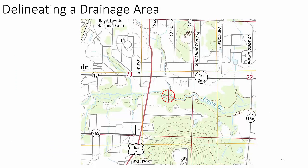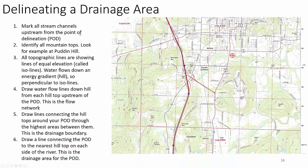We're going to identify a particular point on Town Branch — just east and south of where Highway 16 crosses Business 71 School Street. Let's say we have a project at this intersection just above where these two creeks converge, and we need to delineate the drainage above this site. The first thing you do is mark all the stream channels from that point — highlight them so you can see Cato Springs and this tributary. Start highlighting all the streams in the system; use a different color for surrounding streams. That gives you a general layout of your system.